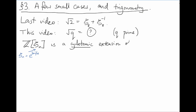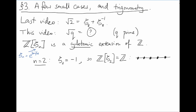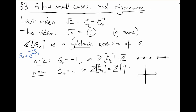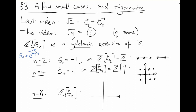Rings of the form Z adjoin zeta_n, where zeta_n is a primitive nth root of unity such as e to the 2πi/n, are called cyclotomic extensions of Z. When n equals 2, we're adjoining a primitive square root of 1, which is just minus 1, so we get nothing new. When n equals 4, we're adjoining a primitive fourth root of 1, such as i. When n equals 8, we're adjoining a primitive eighth root of 1. Its lattice picture is four-dimensional, but let's draw the eighth roots of unity in the complex plane.